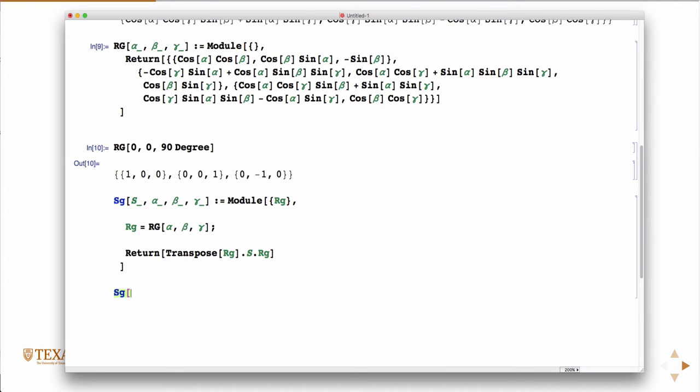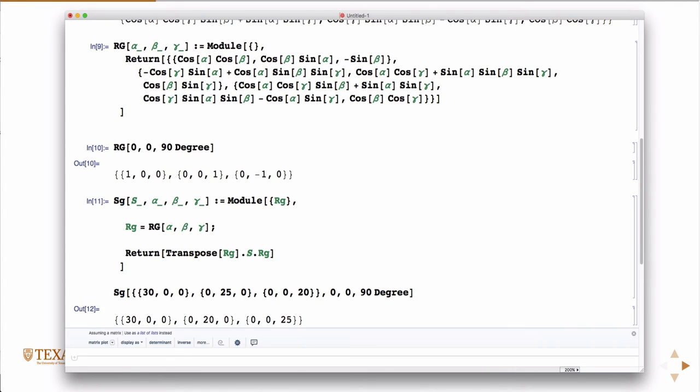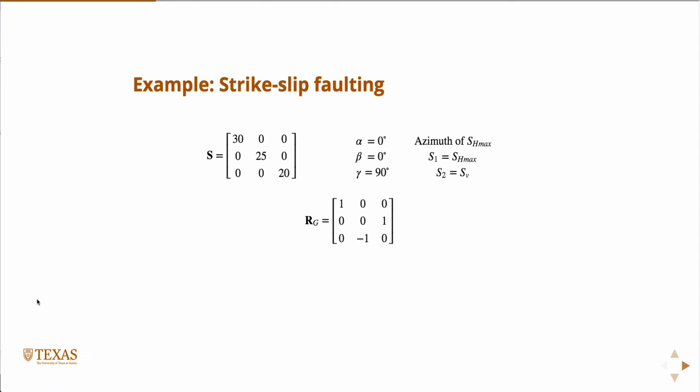Inside this function I'm going to call the other one, so RG equals that. Then I'm going to return RG transpose dotted with S dotted with RG. Let's call that function. The stress was 30, 0, 0, 0, 25, 0, 0, 0, 20. Alpha 0, 0, 90 degrees. And I get back 30, 20, 25. Here are the correct answers to test a potential future code you're going to write.